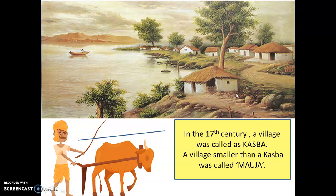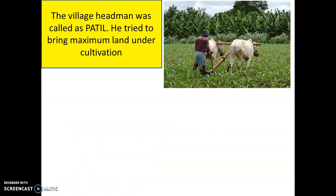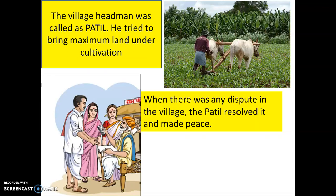You see a man with a bullock and a plough — he is a farmer. Farming was the chief occupation of people in the 17th century in Maharashtra and also in other parts of India. Every village had a headman, just as you have a monitor in class. This headman had to bring maximum land under cultivation — that was his first job. The village headman also resolved disputes in the village, so whenever there were fights, people would go to the Patil, and he would help bring peace.